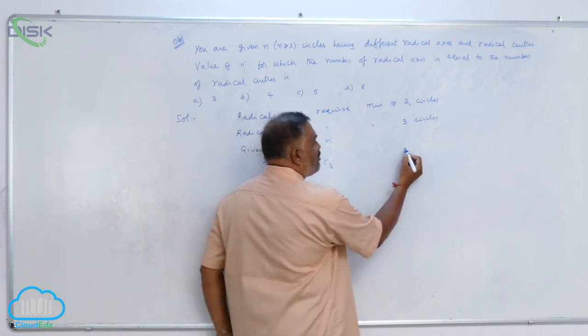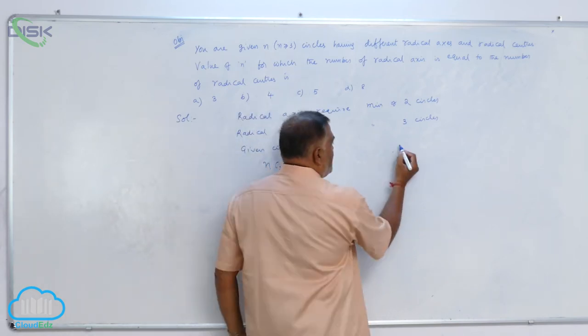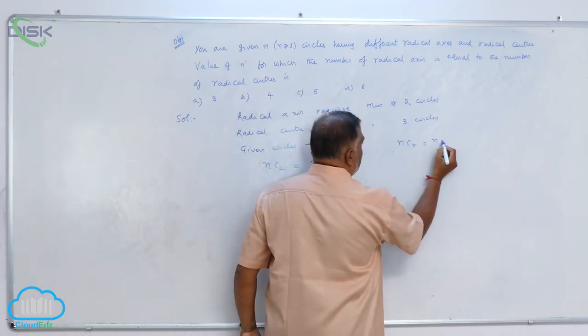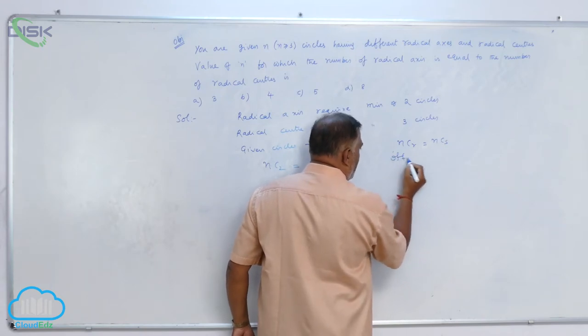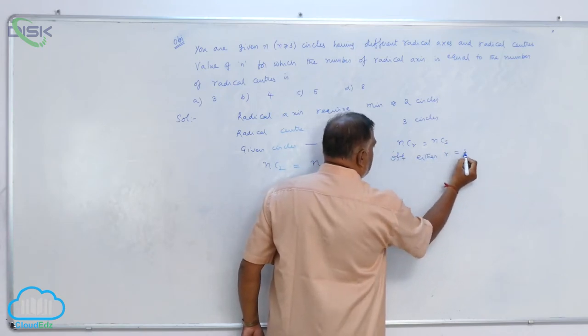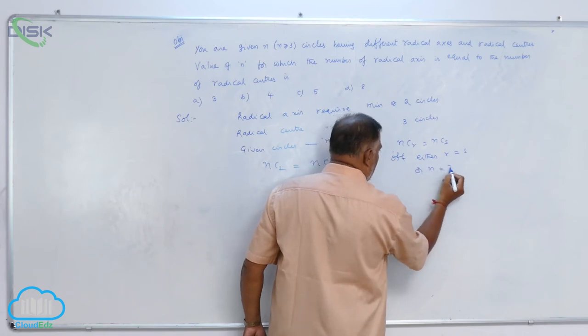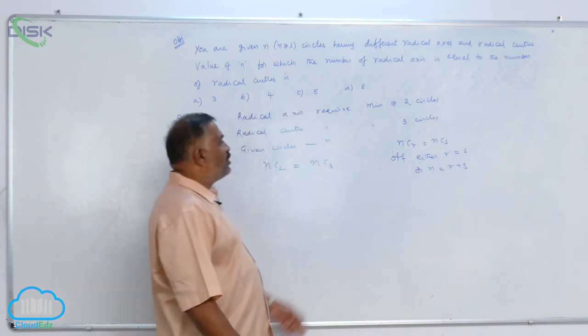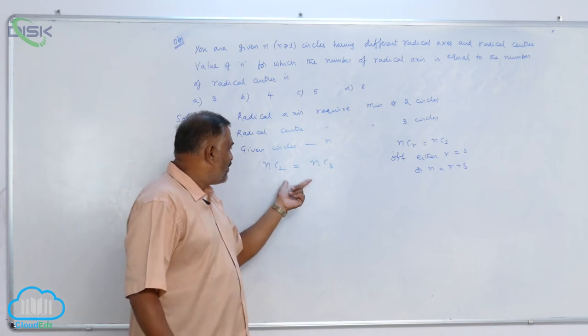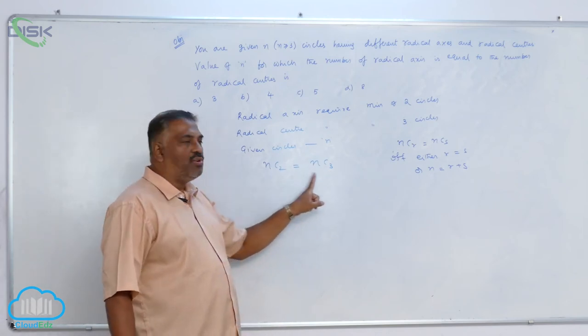We have one formula from binomial theorem: NCr equals NCs if and only if either r equals s, or N equals r plus s. Compare this with our NC2 equals NC3.